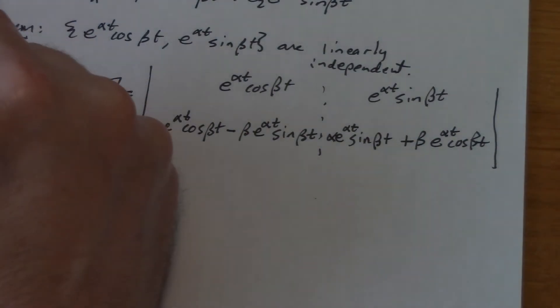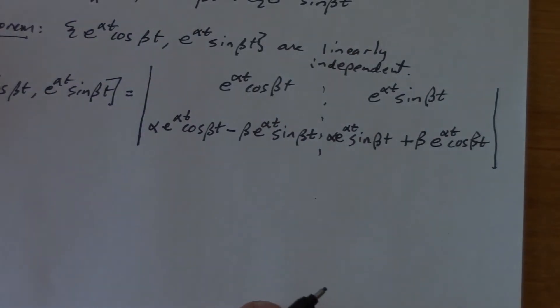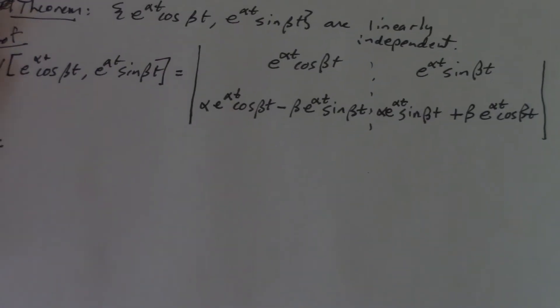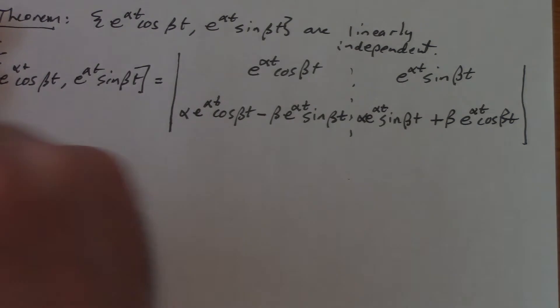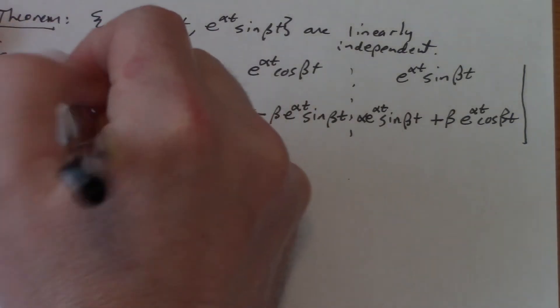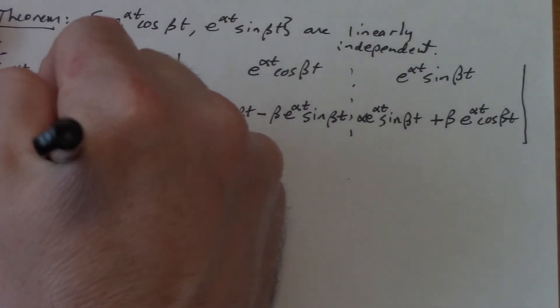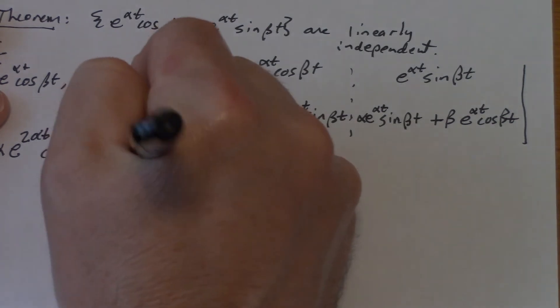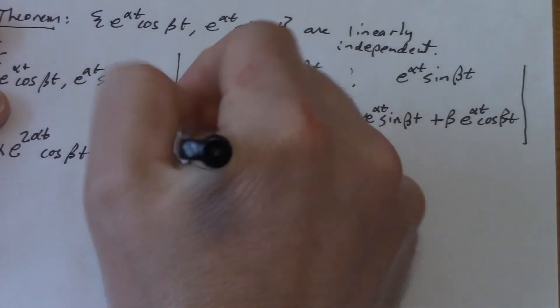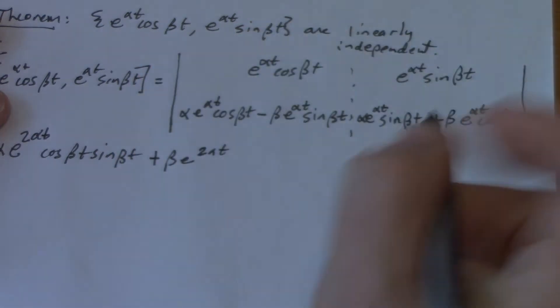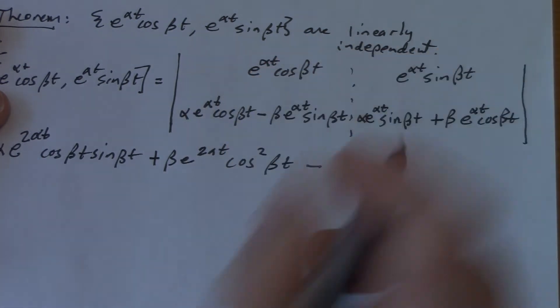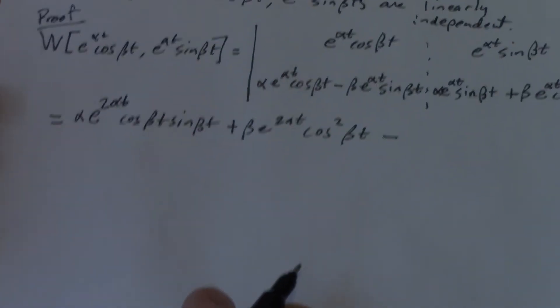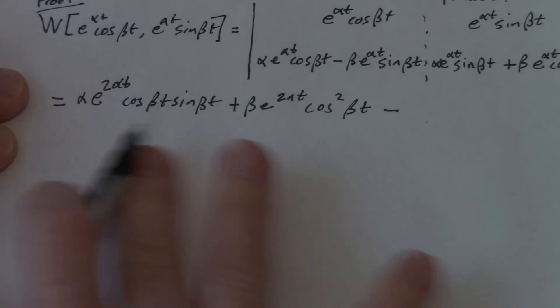When I multiply this out, it turns into a big giant mess. But look, it's got sines and cosines in it. First of all, something's going to cancel. And second off, there's going to be a Pythagorean identity in there somewhere that's going to make everything turn out nice. So I'm going to write this over in the corner. This guy times both of those is going to be alpha e to the 2 alpha t, and then cosine beta t sine beta t, plus beta e to the 2 alpha t, and I've got cosine beta t squared.